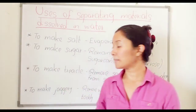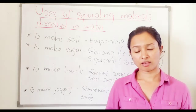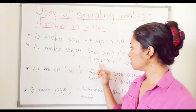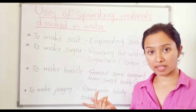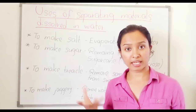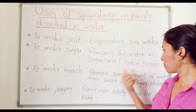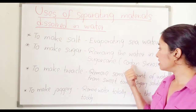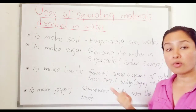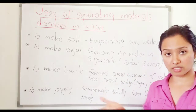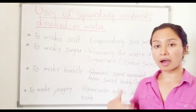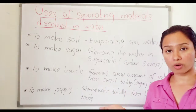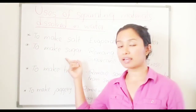To make sugar: we take sugar cane, grind it, and take the juice. This juice contains sucrose. We then remove the water from this solution to make sugar.